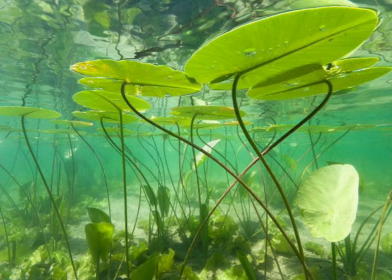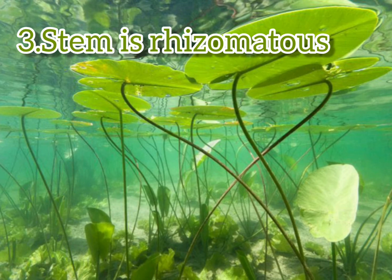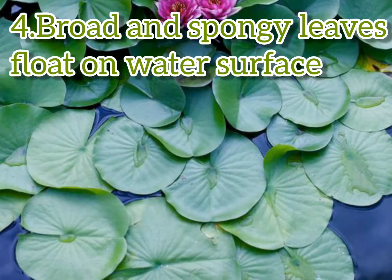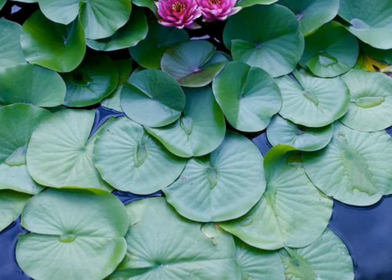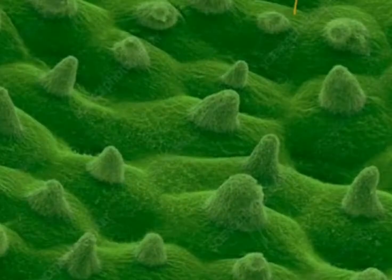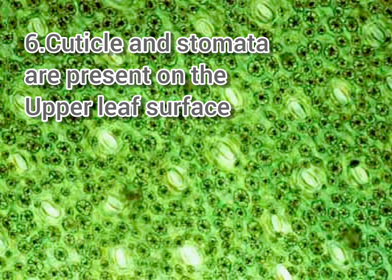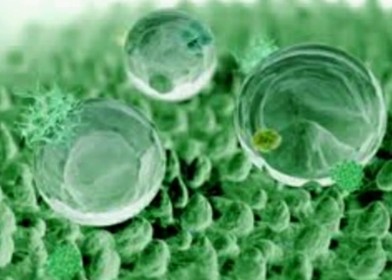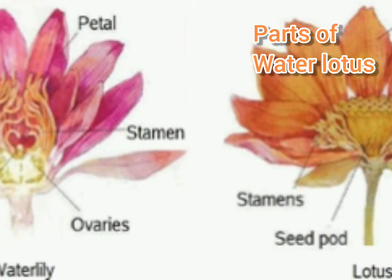The stem is rhizomatous and grows horizontally under the water in the mud. Broad and spongy leaves float on the surface of the water. The petiole is slender and gets elongated to keep the leaves at the surface. The cuticle and stomata are present on the upper surface of the leaves. A waxy coating on the upper surface prevents wetting and clogging of stomatal pores. In this picture you can see the different parts of the water lotus.